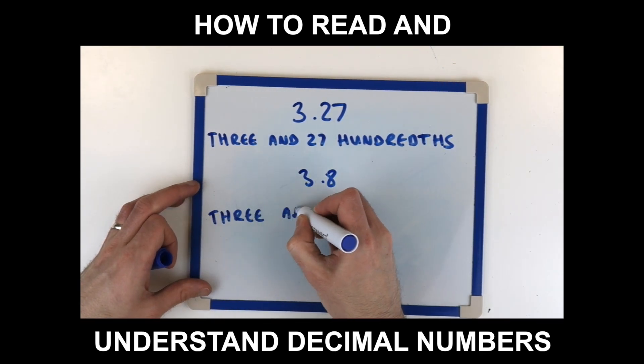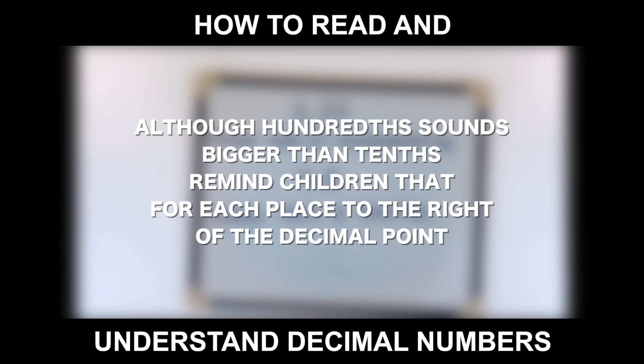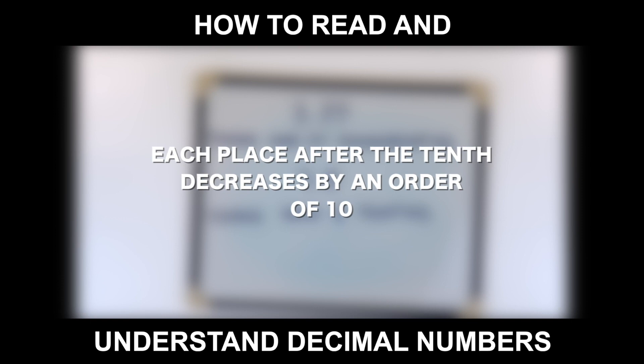Although hundredths sounds bigger than tenths, remind children that for each place to the right of the decimal point, the numbers are successively smaller by powers of 10. Each place after the tenths decreases by an order of 10.